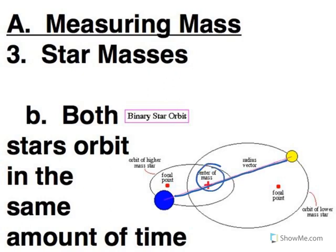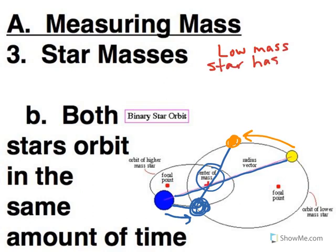So let's say our high mass star moves over to this position. Well, if we put our low mass star opposite it, we see that our low mass star had to cover a big distance compared to what the high mass star had to cover in the same amount of time. And so in general, our rule of thumb is the low mass star has to move faster than the high mass star.